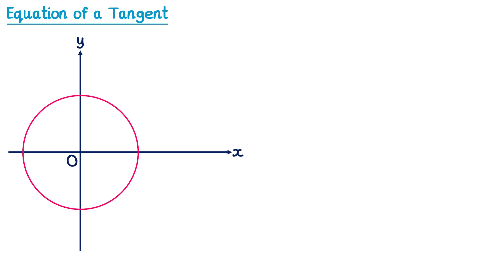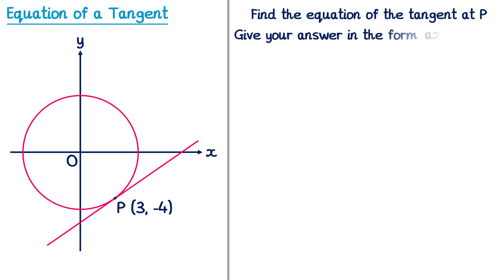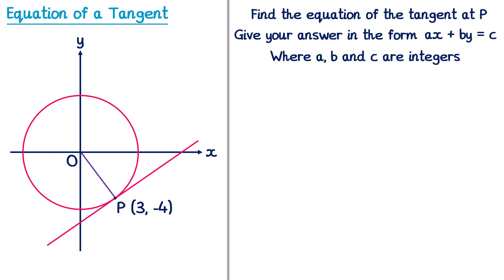Let's try a second example where the point P is in a different place, so this time it's coordinates (3, negative 4). We'll also look at how an exam question might be worded. It could say: find the equation of the tangent at P, give your answer in the form AX plus BY equals C, where A, B and C are integers. We're still going to start by finding the equation of the tangent using the process we did before, by drawing a line from O to P and finding its gradient.